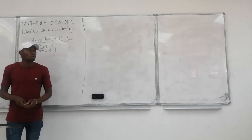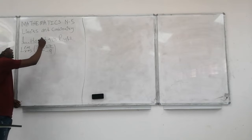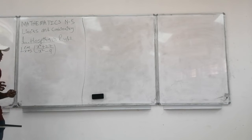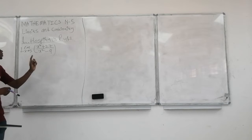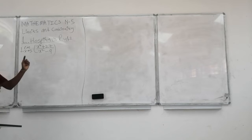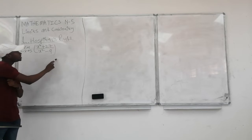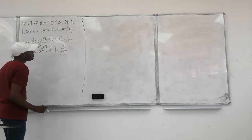Good day everyone. Today we are going to look at Mathematics 5, limits and continuity, and we are going to deal with L'Hôpital's Rule. We are given an equation: the limit as x approaches 3 of x cubed plus 27 all over x squared minus 9. When we apply direct substitution here, we are going to end up with 0 over 0.